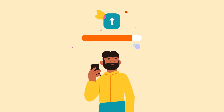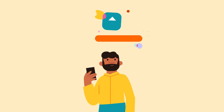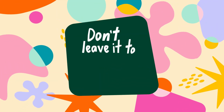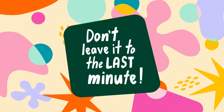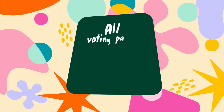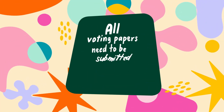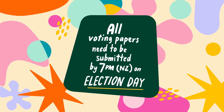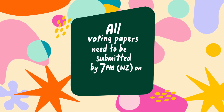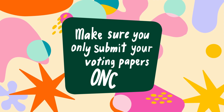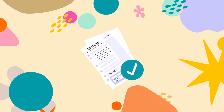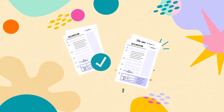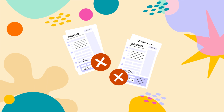If it's successful, you will see confirmation letting you know it's complete. Don't leave it to the last minute — all voting papers need to be submitted by 7pm New Zealand time on Election Day. And make sure you only submit your voting papers once, as submitting your papers more than once may mean your vote won't count.